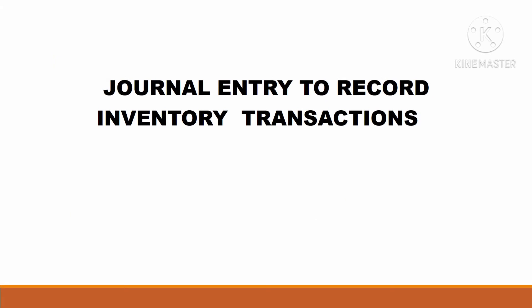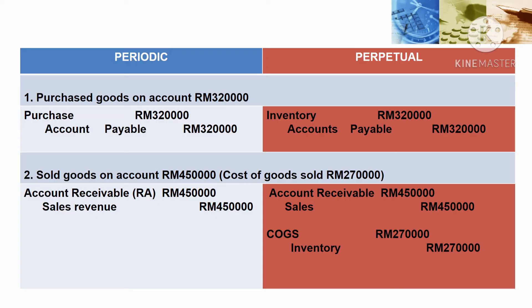Now we can see the difference between periodic and perpetual inventory system in how to record journal entries for inventory transactions. Under periodic inventory system, when purchasing goods on account, debit purchases and credit accounts payable. Under perpetual inventory system, debit inventory and credit accounts payable RM320,000. So under periodic we use a purchase account, and under perpetual we use the inventory account.